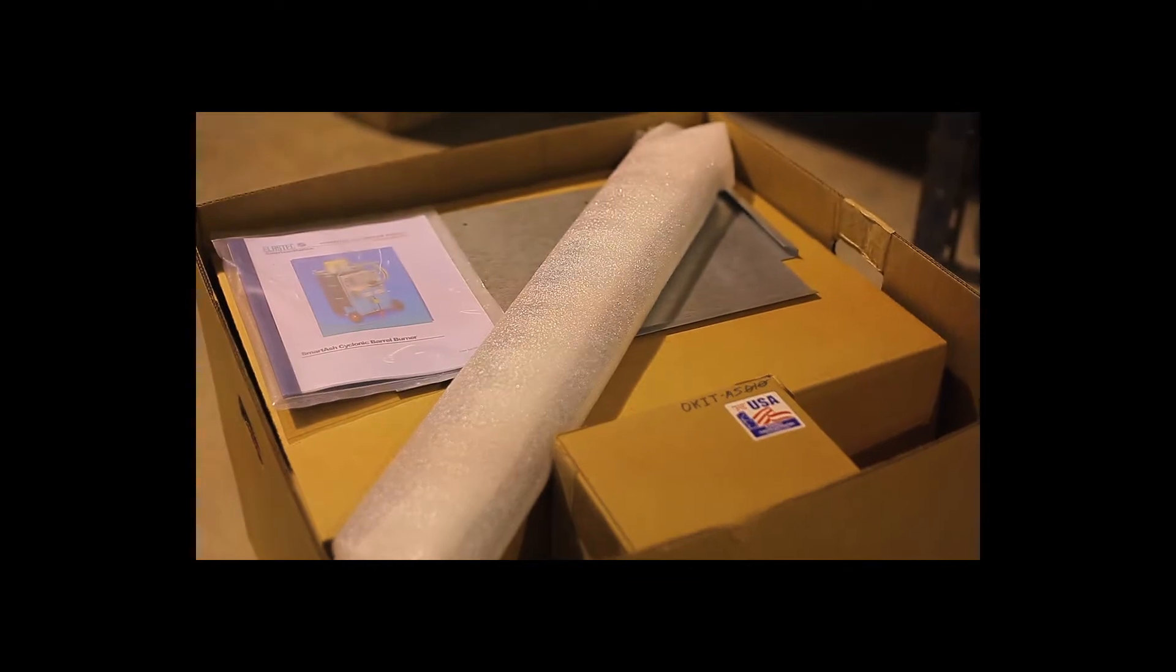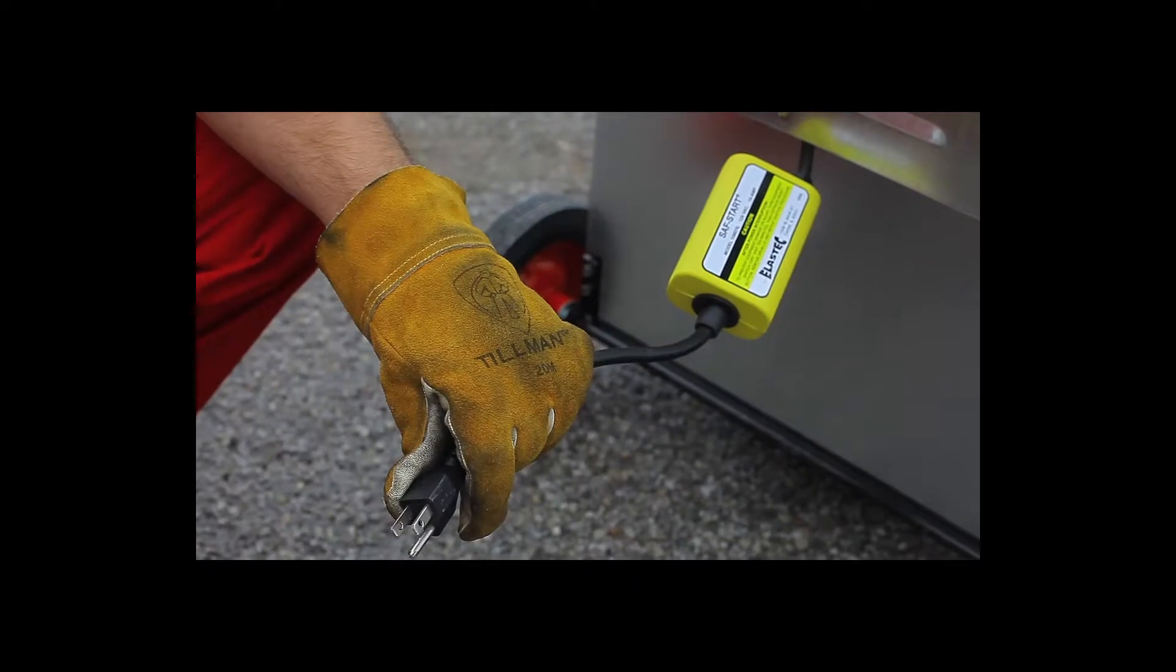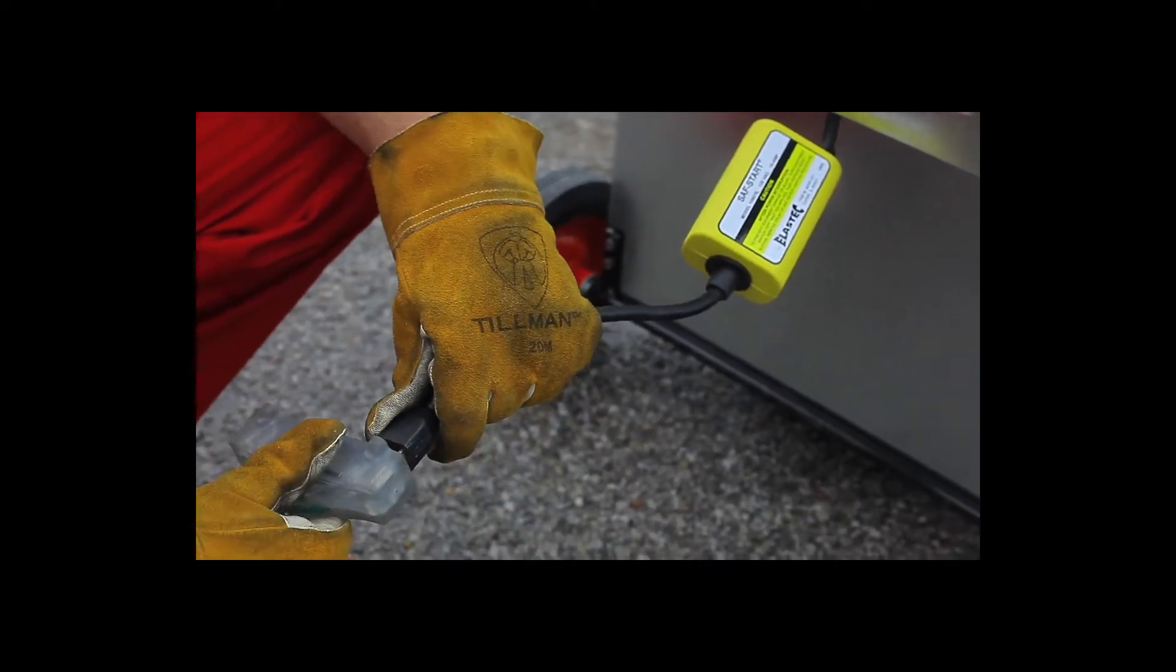The standard Smart Ash system includes lid, blowers, hoses, and a cart for easy shipping. All you need is a 55-gallon open head steel drum and 120 or 220-volt electrical source.